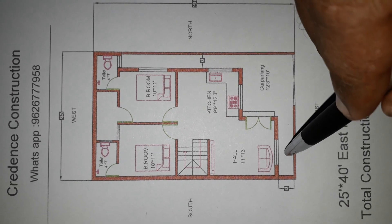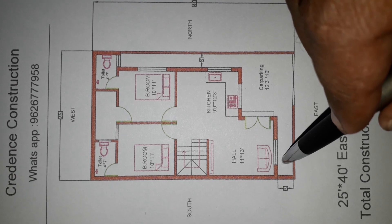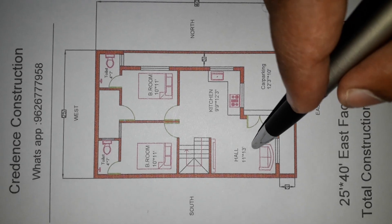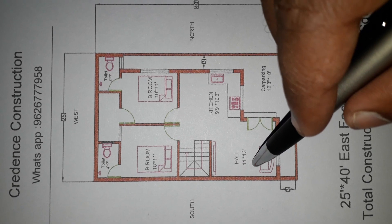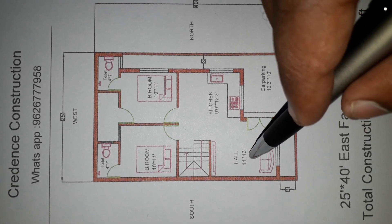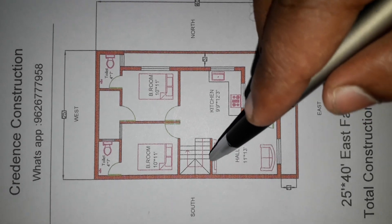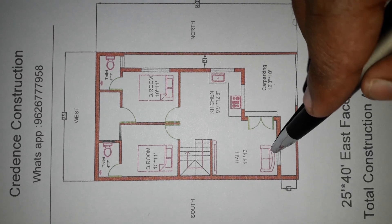The hall has one window with a size of 4 feet by 3 feet. Hall size is 11 feet by 13 feet. The hall includes space for a TV and sofa set.